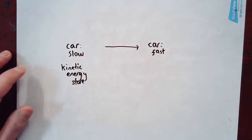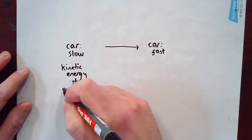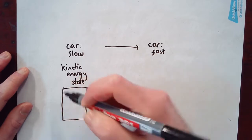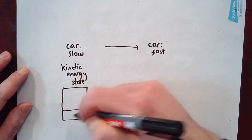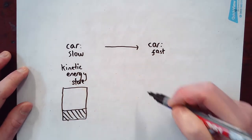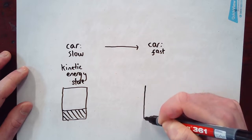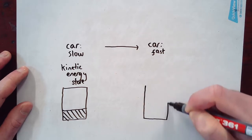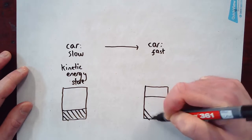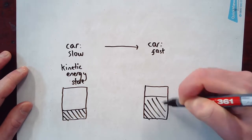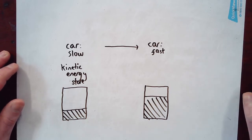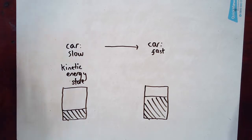That word 'kinetic' means to do with movement. Again, I'll draw it as a box. So at the start it might have a small amount of energy in its kinetic energy store — it's still moving, just not moving fast — and then at the end there's more energy in its kinetic energy store, it's moving faster. So that's the second store, which is the kinetic energy store.